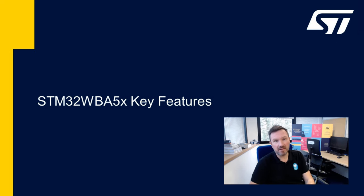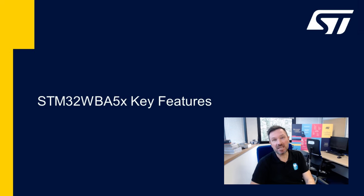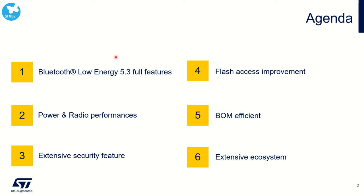Before starting to build a Bluetooth Low Energy application on the WBA55 Nucleo board, let's take the opportunity to look at the product capabilities, the main assets, and the associated ecosystem. In this section we'll go through the main product capabilities: the Bluetooth Low Energy features, the power and radio performances, the extensive security feature set inherited from the STM32U5 series, hardware configuration demonstrating BOM flexibility, and the ecosystem to leverage your software and hardware design.